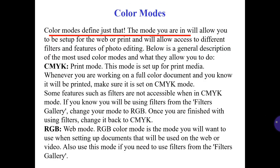Color modes. Color modes define just that. The mode you are in will allow you to be set up for the web or print and will allow access to different filters for photo editing. Below is a general description of the most used color modes and what they allow you to do. There are CMYK and RGB. CMYK is print mode — this mode is set up for print medium. Whenever you are working on a full color document that will be printed, make sure it is set to CMYK mode. Some filters are not accessible when in CMYK mode.